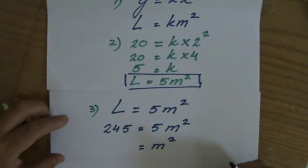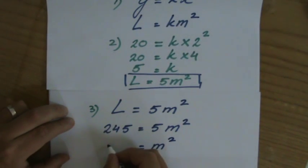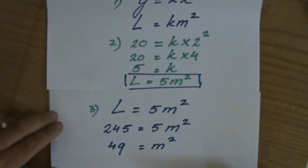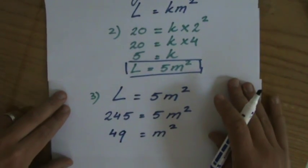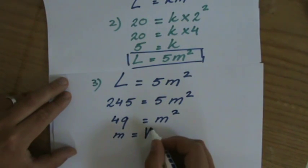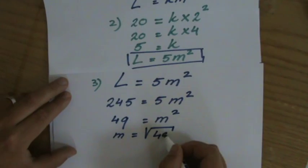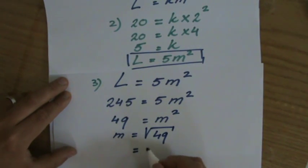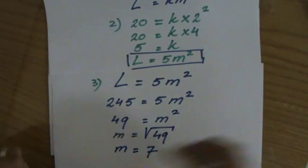Yeah? So I isolate m squared. Now 245 divided by 5, that's going to be 49. Yeah? But you have a calculator to help you with that if you need it. m squared equals 49. Then m will be the square root of 49, and that is going to be 7.